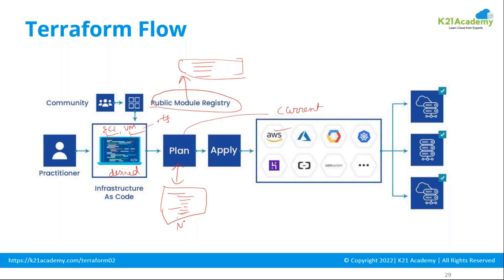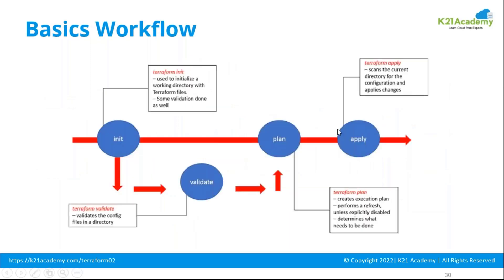If everything matches, plan will show the message 'No changes required — your infrastructure matches the configuration.' Once you're satisfied with the plan results, you run terraform apply, which executes the .tf file using the APIs downloaded from the Terraform registry. Apply connects to your respective provider — AWS, Azure, GCP, Kubernetes — and starts creating your defined resources.